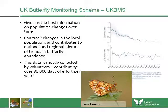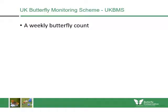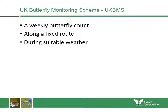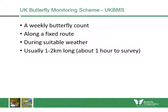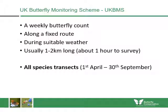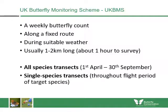This data is mostly collected by volunteers who contribute about 80,000 days worth of effort every year. At its heart, the UK BMS is a weekly butterfly count along a fixed route during suitable weather, usually about one to two kilometers long, taking about one hour to survey — slightly longer in midsummer when more butterflies are seen. There are all-species transects running from 1st April to 30th September, and single-species transects which only run during the flight period of target species such as the small blue butterfly or the northern brown argus.